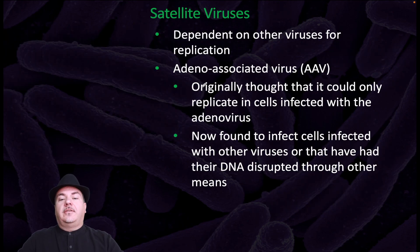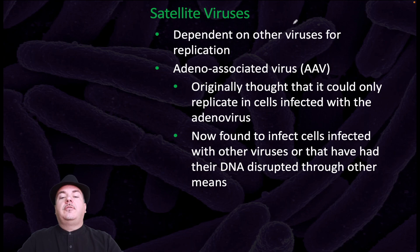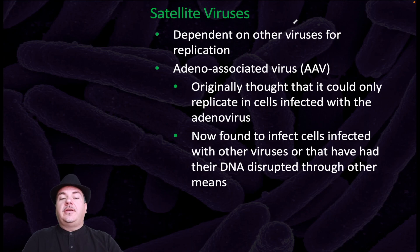We also have satellite viruses. These are dependent on other viruses for replication. For example, adeno-associated virus was originally thought to only replicate in cells infected with the adenovirus. However, it's now found to infect cells infected with other viruses or that have had their DNA disrupted through other means.